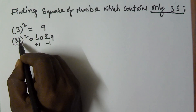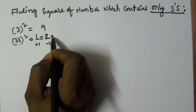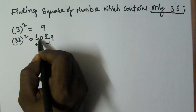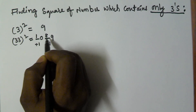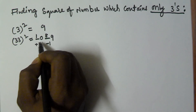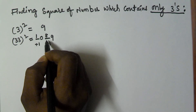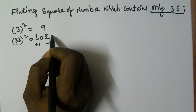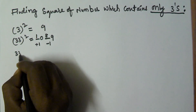So we take 3 squared which is 9, written as 09 — that's 2 digits, so we take 1 space before and 1 space after. In the first space we put the plus 1 value, and in the last space we put the minus 1 value of 9. Now let's find 333 squared.